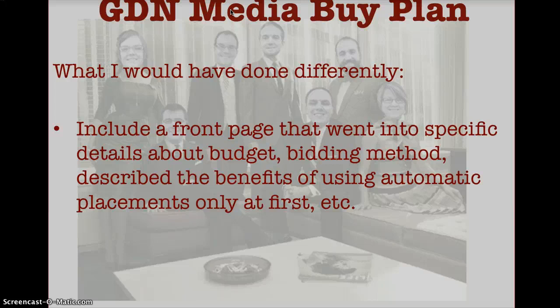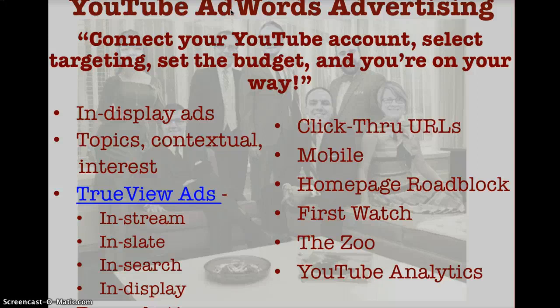For YouTube AdWords advertising, all you have to do is connect your YouTube account, select the targeting, set the budget, and you're on your way — or so the YouTube advertising site tells us. Display ads offer your videos alongside related YouTube videos or on websites on the Google Display Network that fit your audience target. This is just regular display targeting, except instead of image or text ads you use video ads, and you can use topics, contextual, and interest targeting just like any other regular display campaign.